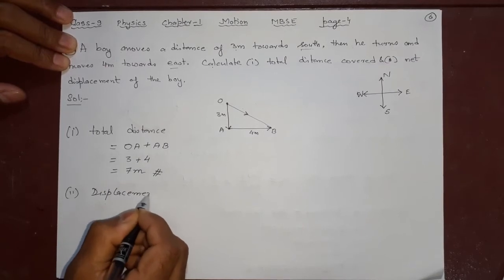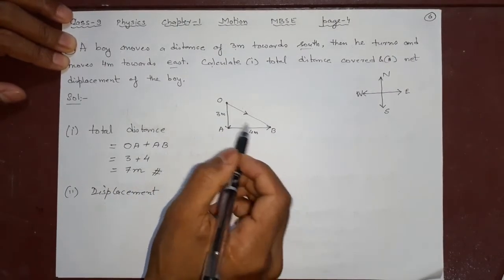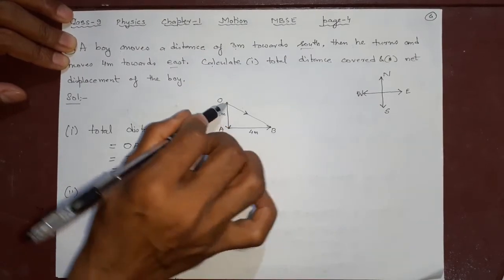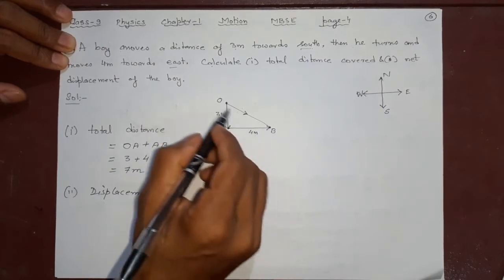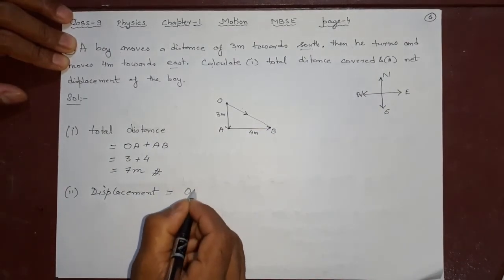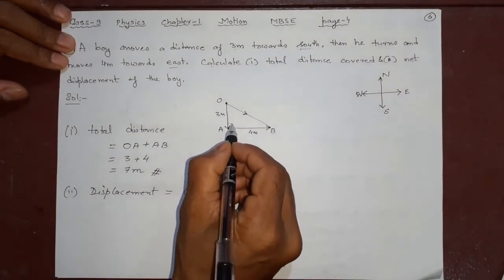Displacement. When you write displacement, we don't think about where is the path, how it went originally. We only see starting, we only see ending. How far is this? OB. Displacement is simply OB. So I need to find what is OB. How to find this OB? Not by scale, by mathematical operation. What is that?